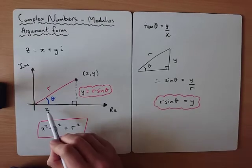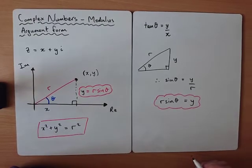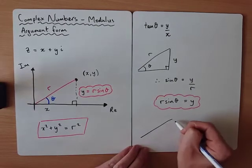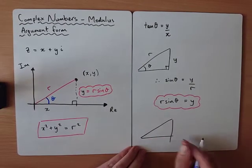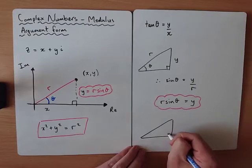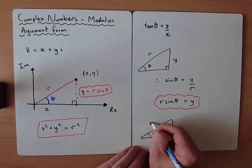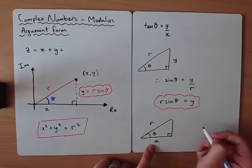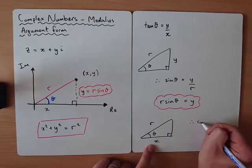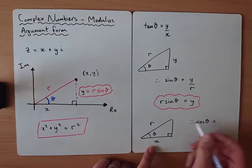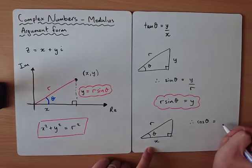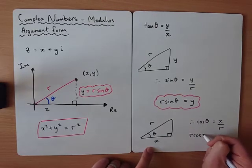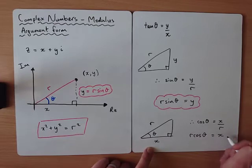Similarly, x is the adjacent side, so cos θ = adjacent/hypotenuse. Therefore x = r cos θ. This gives us a way to convert back from the modulus-argument representation to Cartesian form.